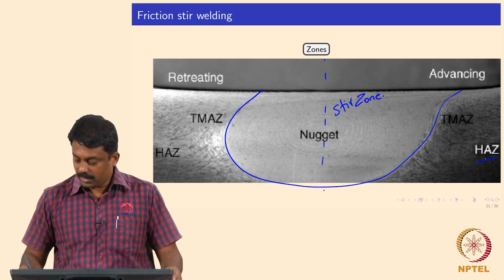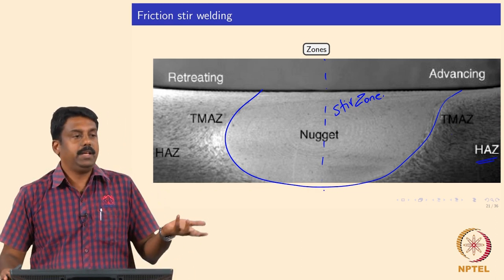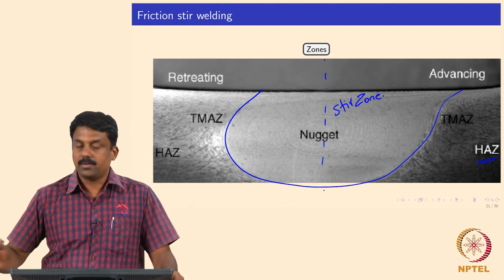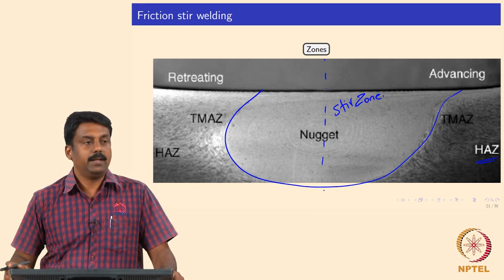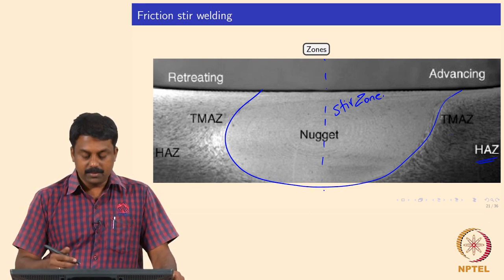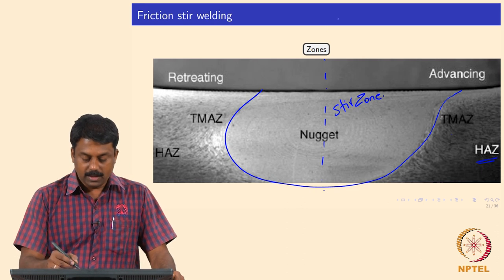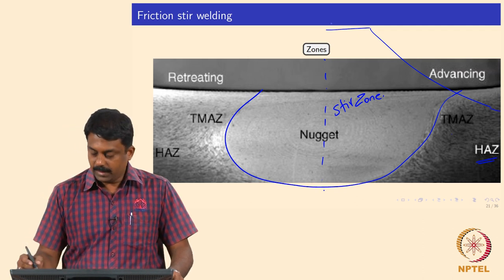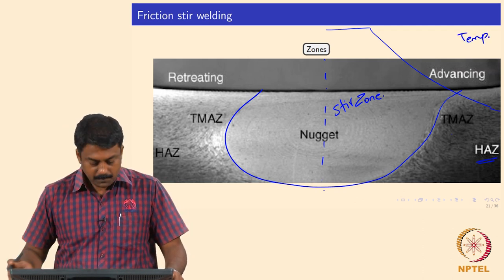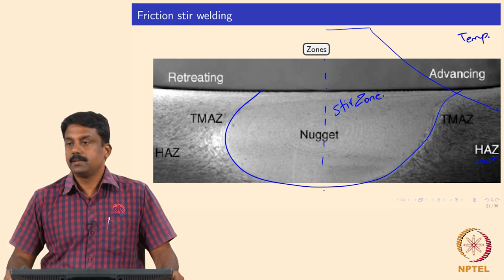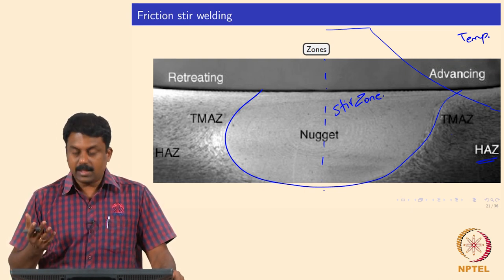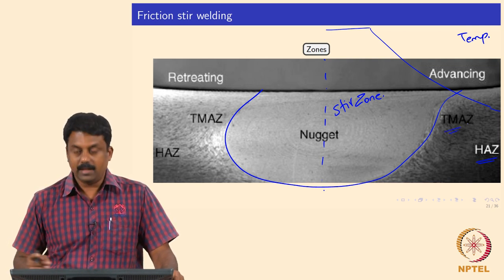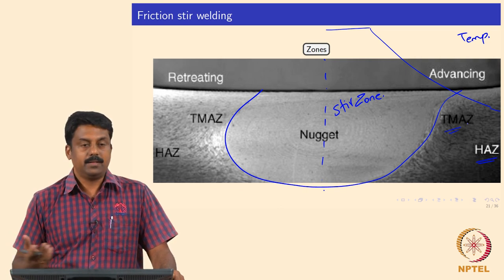Moving further away, you have a heat affected zone where you do not see any mechanical deformation but still see some temperature effect, because heat is dissipated from the central line. The temperature distribution is similar to arc welding — maximum temperature at the centre going down outward. In conventional arc welding you have a fusion zone and heat affected zone; but in friction stir welding there is an additional zone — the thermomechanically affected zone (TMAZ).